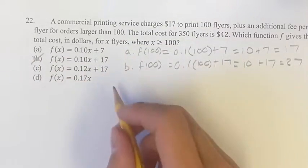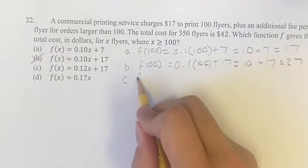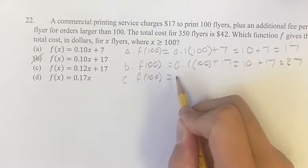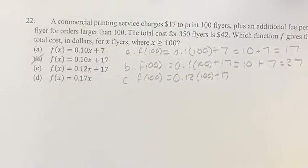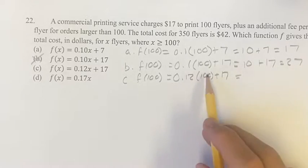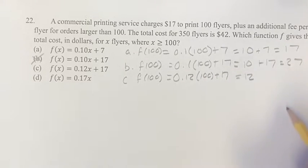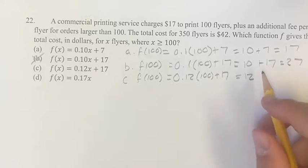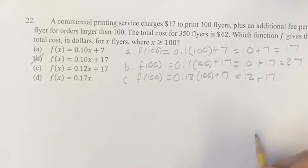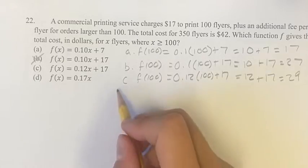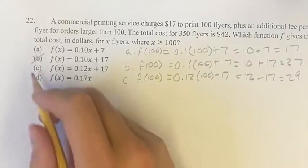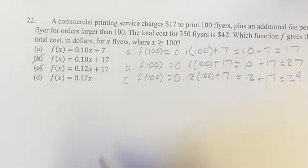We're down to A, C, and D. For C, f(100) equals 0.12 times 100 plus 17. 0.12 times 100 is 12. You might be able to see that yourself, but if not use your calculator. 12 plus 17 equals 29. This is also not what we're looking for, so C is not correct either.